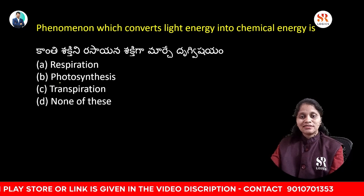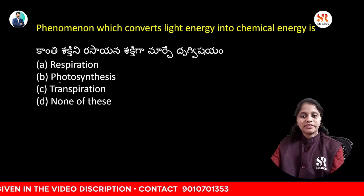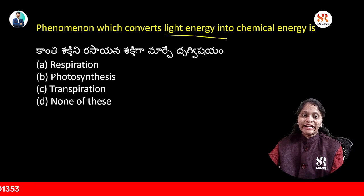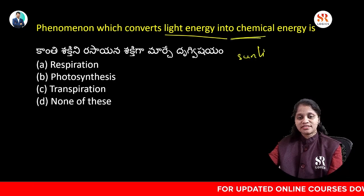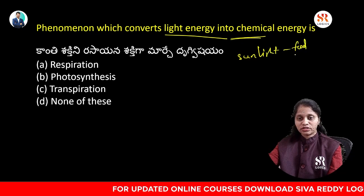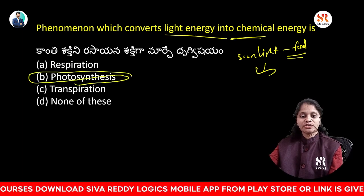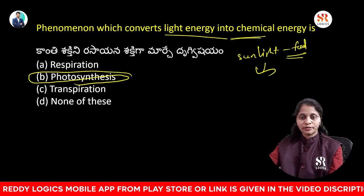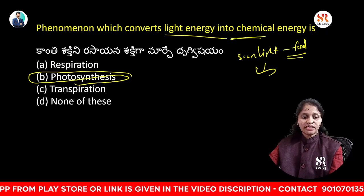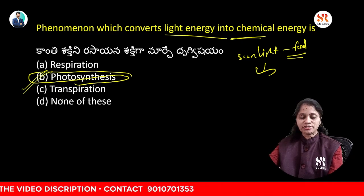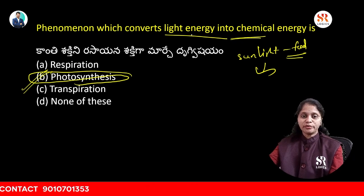The phenomenon which converts light energy into chemical energy is called: respiration, photosynthesis, transpiration, or none of these? Plants use sunlight to prepare their food, converting light energy into chemical energy. That process is known as photosynthesis. Option B, photosynthesis, is your answer.